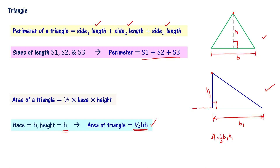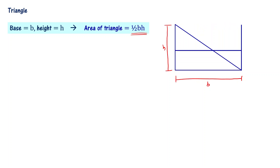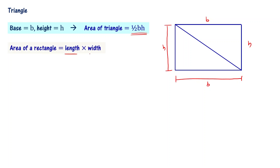If you have any doubts about how we get this particular formula, let us take a look at this. Let me call this as base of length B and height of length H. We know that area of this particular triangle is half BH. I am going to draw parallel lines like this. When I draw two parallel lines, it becomes the full shape — it is a rectangle. We know area of rectangle is defined as length times width. In this particular case, length is B and width is H, so area of rectangle is B times H.